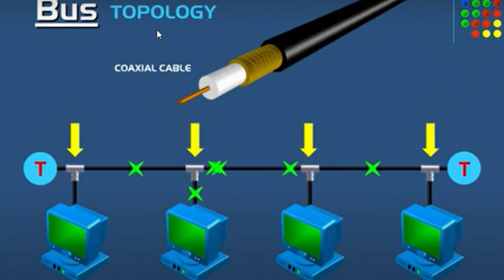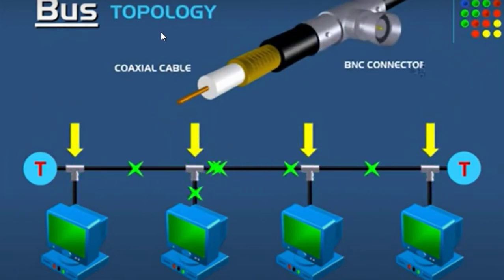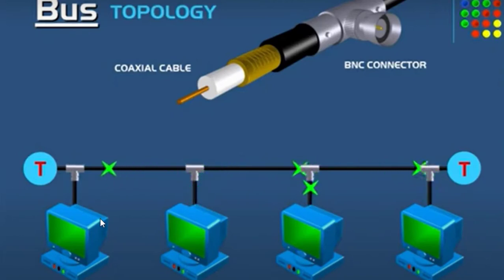Kekurangannya, ketika kabel mengalami kerusakan atau putus, maka mengalami gangguan pada keseluruhan jaringan. Karena di sini terdapat satu kabel yang terhubung dengan keseluruhan kabel, ketika salah satu kabel ini putus, maka keseluruhan dari komputer ini tidak akan terhubung.